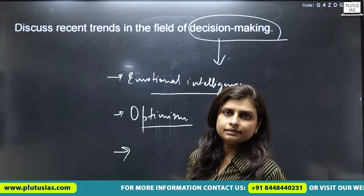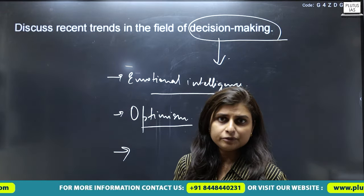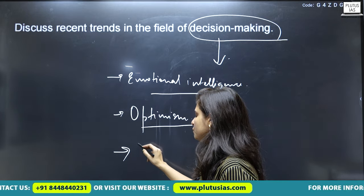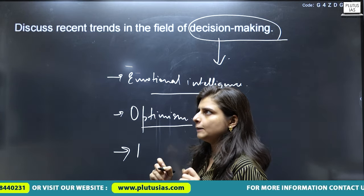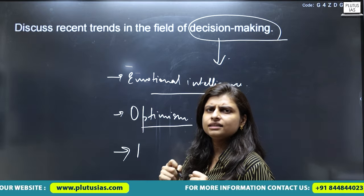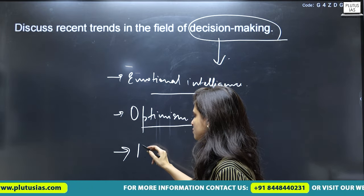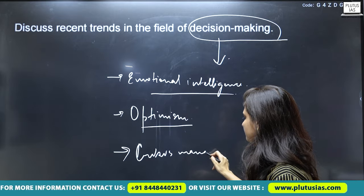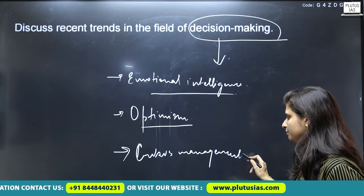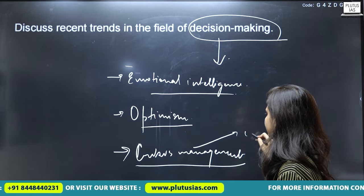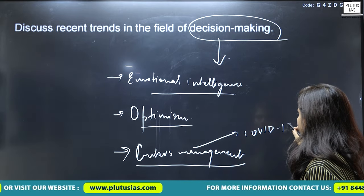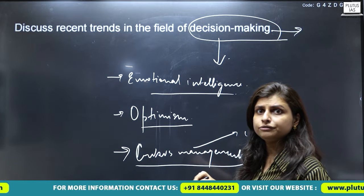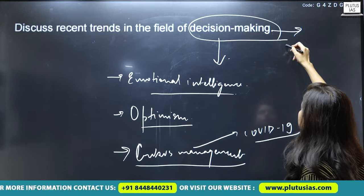You can also discuss how crisis management affected decision making — for example, you can give the present-day example of COVID-19 and how people addressed the crisis issue. You can also refer to social behaviorism theory in this context.